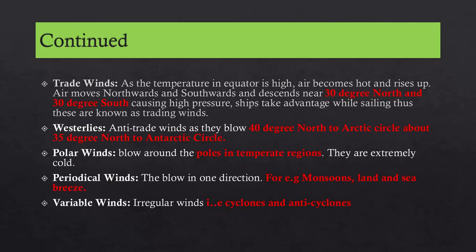There are several types of winds. Trade winds: as the temperature at the equator is high, air becomes hot and rises up, moves northward and southward, and descends near 30 degrees north and south, causing high pressure — ships take advantage while sailing, hence they are called trade winds. Westerlies are anti-trade winds blowing from 40 degrees north to the Arctic Circle, and from 35 degrees north to the Antarctic Circle. Polar winds blow around the poles in temperate regions and are extremely cold. Periodical winds blow in one direction — for example, monsoons and land and sea breezes. Variable winds are irregular winds such as cyclones and anticyclones.